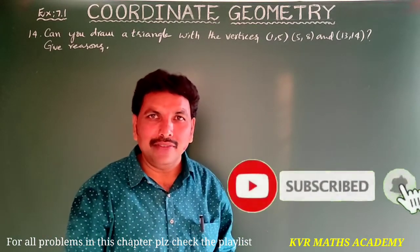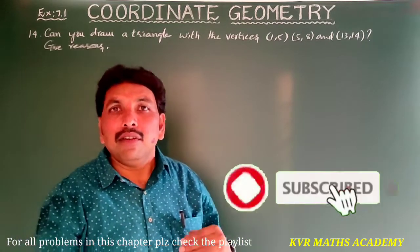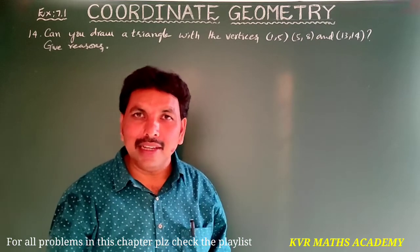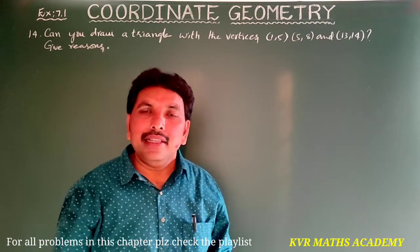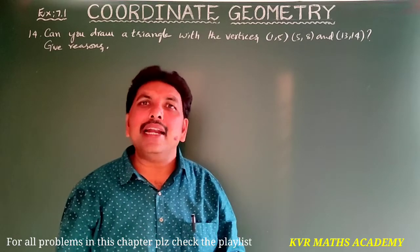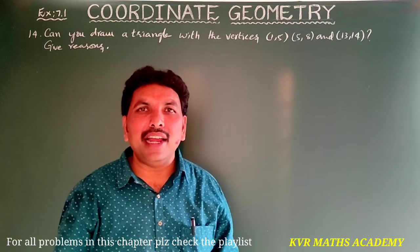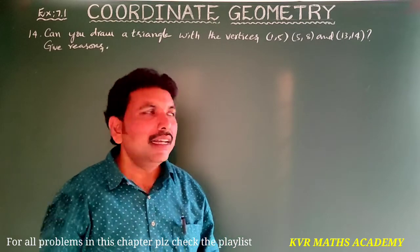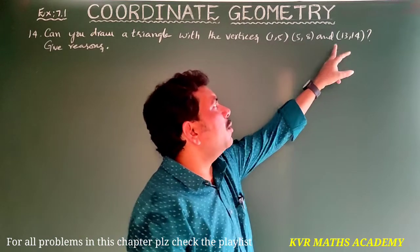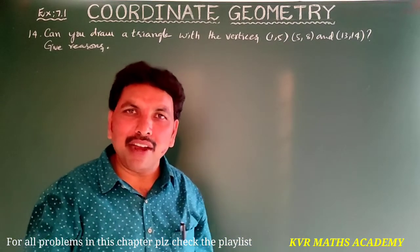How can we find if a triangle can be drawn or not? In a triangle, the sum of any two sides is greater than the third side. So let us check the distances between these pairs of points to find whether they can be the vertices of a triangle.